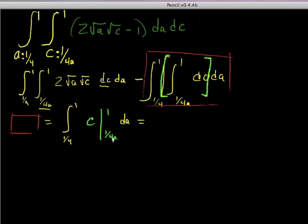Let's evaluate at one subtract off evaluation at 1/(4a). We have integral from 1/4 to 1 of one minus 1/(4a) da, and that equals - this is just the power rule and we see a natural log function coming in here too.